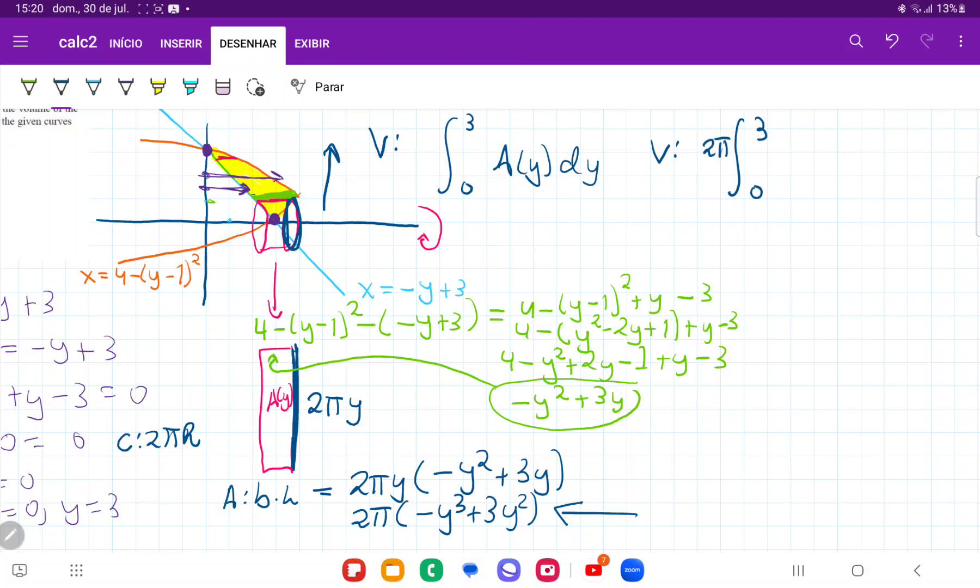So 2π goes outside because it's a constant, integral of minus y cubed plus 3y squared and all of this times dy. So when I integrate it, this is going to give me 2π times minus y to the power of 4 over 4 plus 3y cubed over 3, and all of this evaluated from 0 to 3.